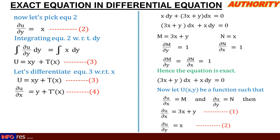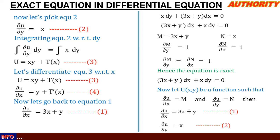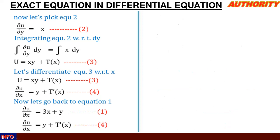Going back to equation 1, we have ∂u/∂x = 3x + y. From equation 4, ∂u/∂x = y + t'(x). Comparing these two equations, we can see that t'(x) = 3x. We are looking for t(x), not t'(x), so we need to integrate.